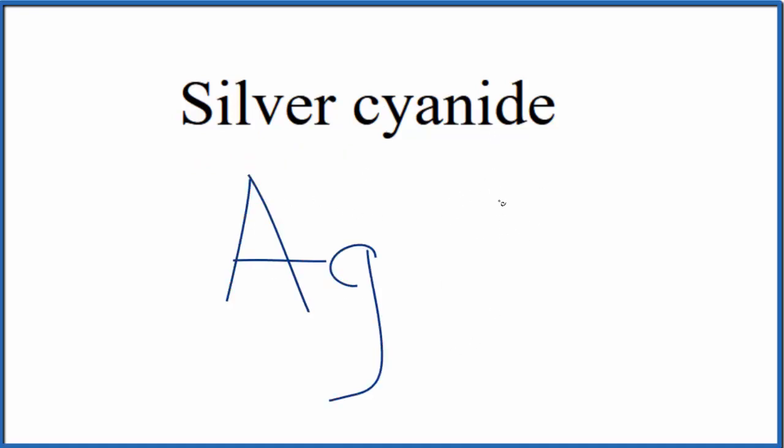And then cyanide, you won't find that on the periodic table. You need to either memorize that the cyanide ion is CN and the whole thing has an ion charge of 1 minus, or if you're allowed, you can look this up on a table of polyatomic ions.